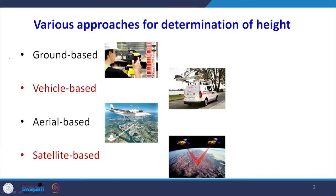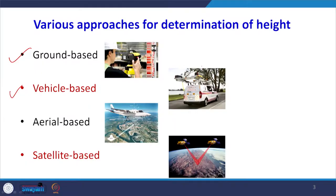In geomatics engineering, there are ground-based methods using digital levels to determine height, total station survey, and GPS survey. There is also a vehicle-based survey where instrumentation is fixed on top of a vehicle — including laser-based devices and GPS systems — as the vehicle moves to give three-dimensional coordinates.